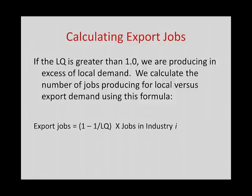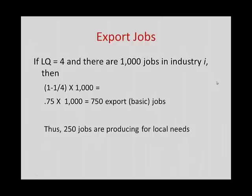The formula for export jobs is: export jobs = (1 − 1/LQ) × jobs in the industry. If the location quotient is 4 and there are 1,000 jobs in industry I, then (1 − 1/4) × 1,000 yields 750 export or basic jobs — jobs producing for external markets. And importantly, 250 of those jobs are producing for local needs.